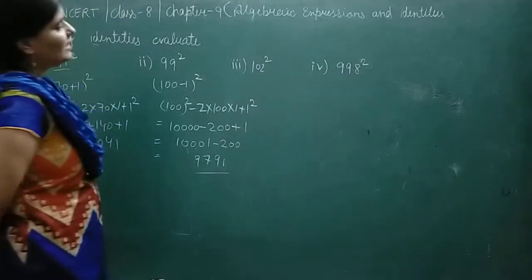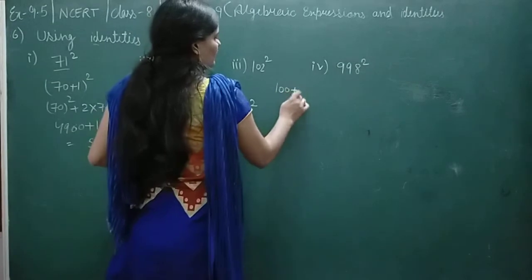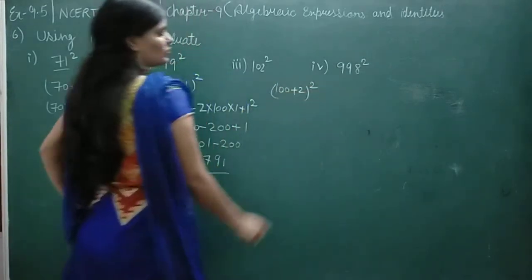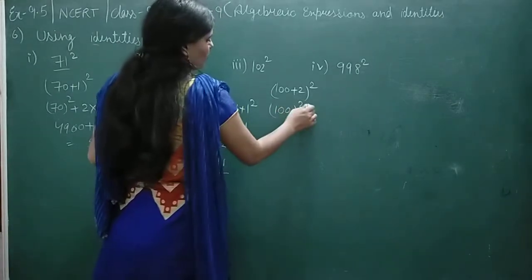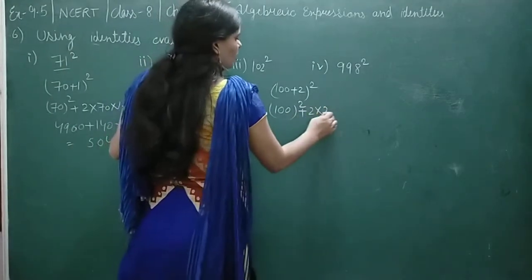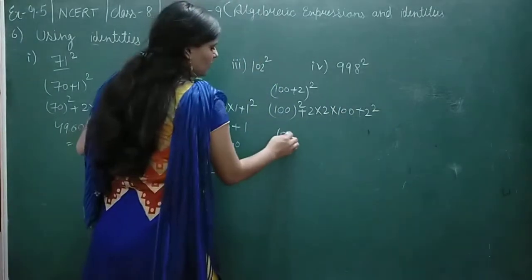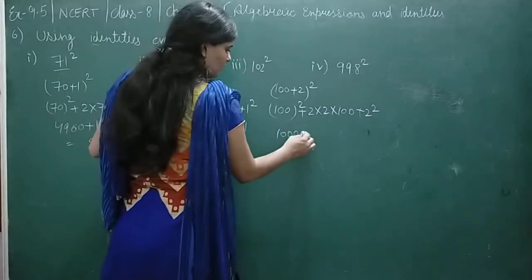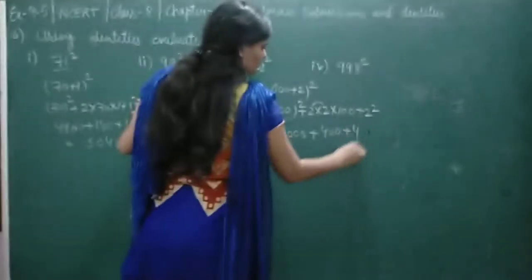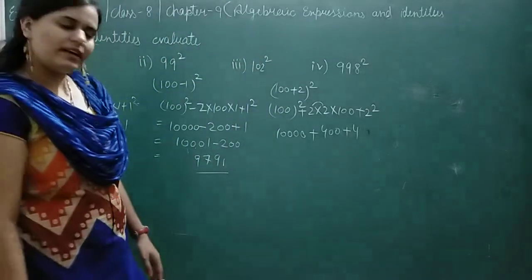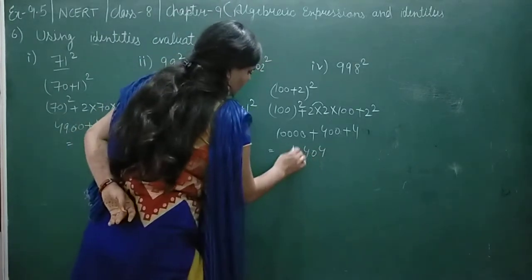Next is 102². It's a bit tough to square directly, so why not write it as (100 + 2)? Squaring 100 is very easy for us. Using (a+b)² = a² + 2ab + b²: 100² = 10000, plus 2×100×2 = 400, plus 2² = 4. So 102² = 10404.